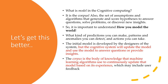It is very important to understand how you model the world. We need to understand what kind of predictions you can make, the patterns, the anomalies that you can detect, and the actions that you can take for the predictions or anomalies you have detected. The initial base model is developed by the designers of the system, but the cognitive system will update the model and use it to answer questions or provide insights. The system evolves — the first base is laid down by the designer, but over and above that the system evolves and that's cognitive in nature. It learns and evolves. The corpus is the body of knowledge that machine learning algorithms use to continuously update that model based on its experience.